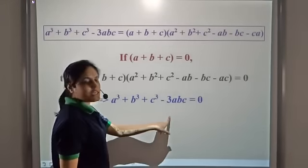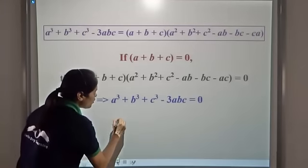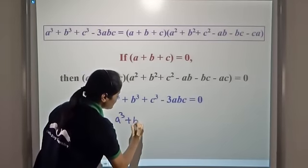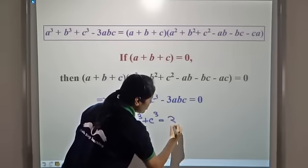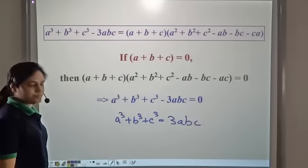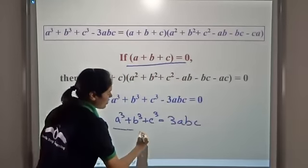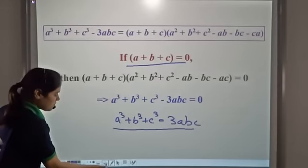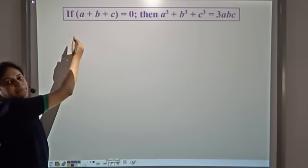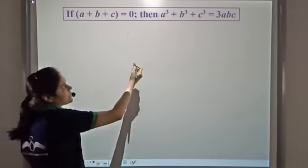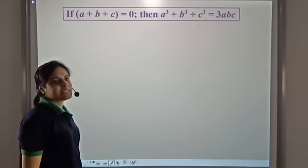So a³ plus b³ plus c³ minus 3abc will be equal to zero. Or we can say a cube plus b cube plus c cube is equal to 3abc. So if a plus b plus c is equal to zero, then a cube plus b cube plus c cube is equal to 3abc.